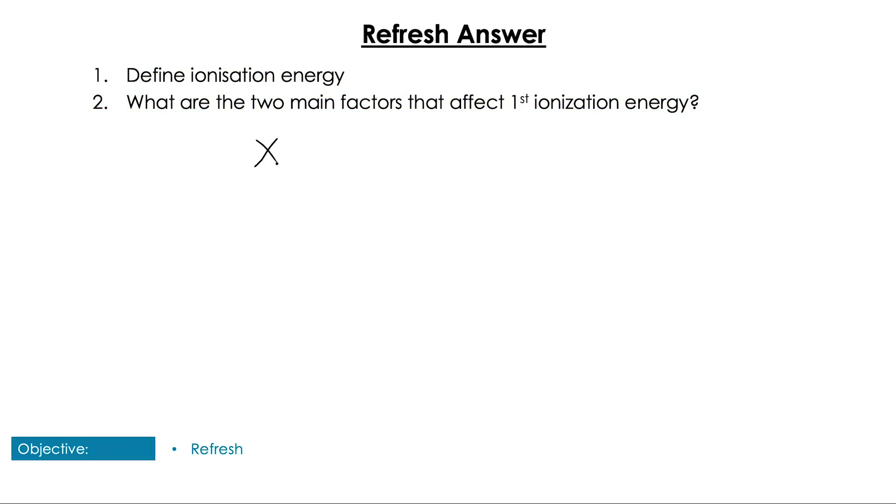Defining ionization energy: remember we need one mole of a gaseous atom that loses an electron and forms one mole of a gaseous one plus ion with one electron. The two main factors that affect ionization energy are effective nuclear charge on the nucleus and the number of electron shells, the principal quantum number.